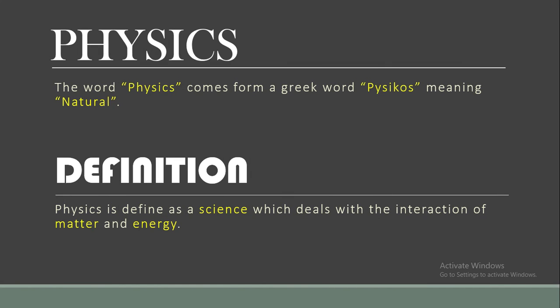Firstly, what is Physics? The word Physics comes from a Greek word Physikos, meaning natural. Physics is defined as a science which deals with the interaction of matter and energy. Physics, science ki wo branch hai, jis mein hum matter aur energy ke aapas ke taaluk ke baare mein padhte hain.